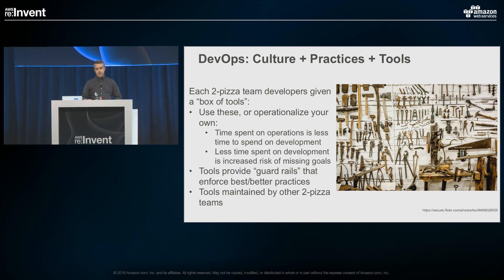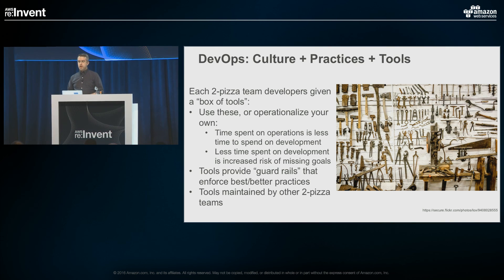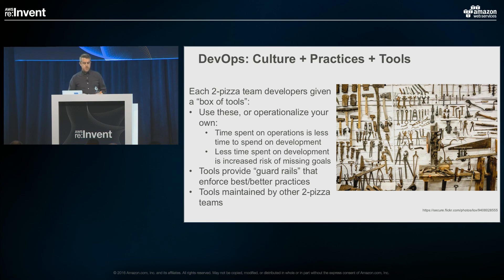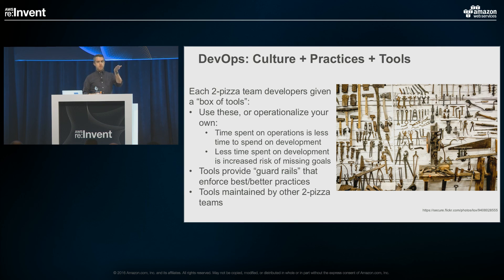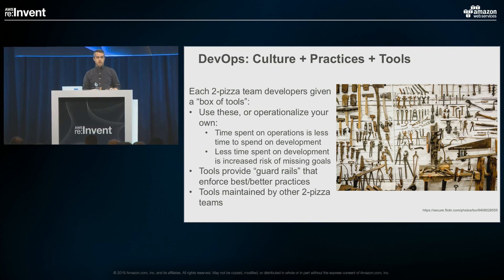Developers at Amazon are given a somewhat fixed box of tools. We've built tools our developers use so they can be really effective. It's very difficult for a large organization to move fast if developers have to own all the components and tools they need to ship their product. So we put a carrot on a stick: use the tools we're providing, or you have to operationalize your own and meet certain standards. The more time spent operationalizing tools, the less time spent on development, and the more likely you are to miss your roadmap and business goals.